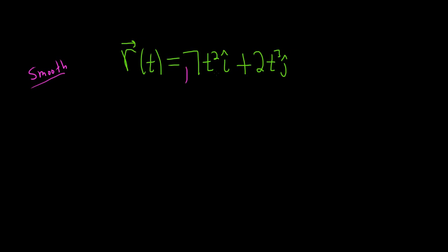So what you can do here is you first start by calling this piece x and this piece y. These are your component functions. So x is equal to 7t squared and y is equal to 2t cubed.